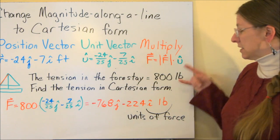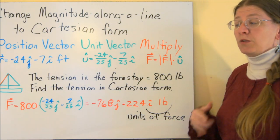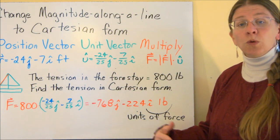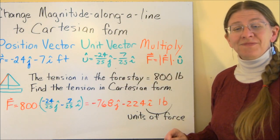So anytime you are given something that looks like this, a physical object with a magnitude, and you need to move it into Cartesian form so that you can work with it with other vectors, position vector, unit vector, multiply. That's what you need to do. Thanks.